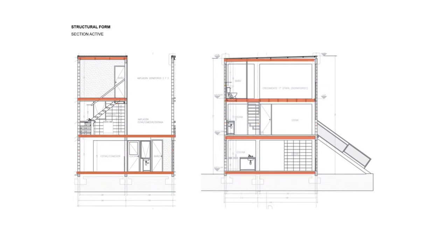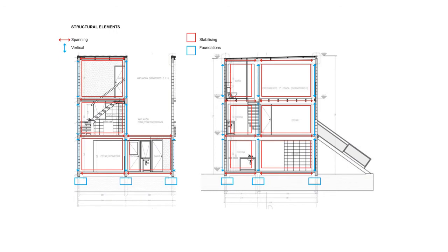The structure form is section-active, meaning the building is mostly using forces in section. The structure is combined with vertical elements such as walls, which create stability, and horizontal spanning floor slabs that keep the walls together.